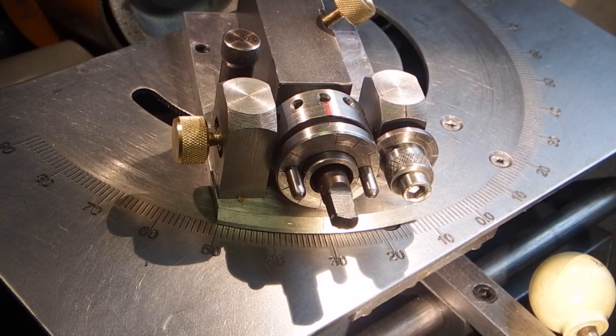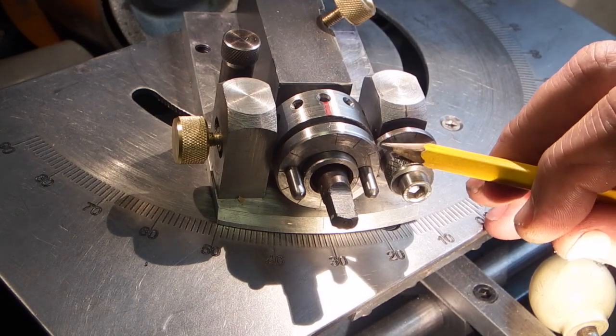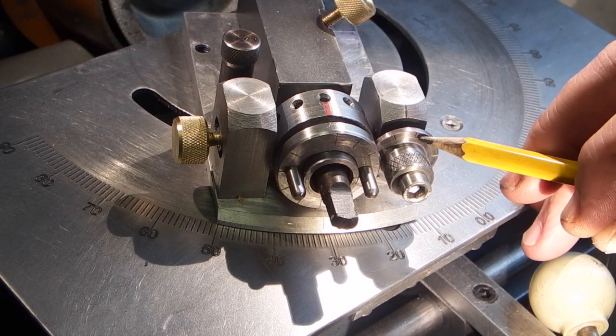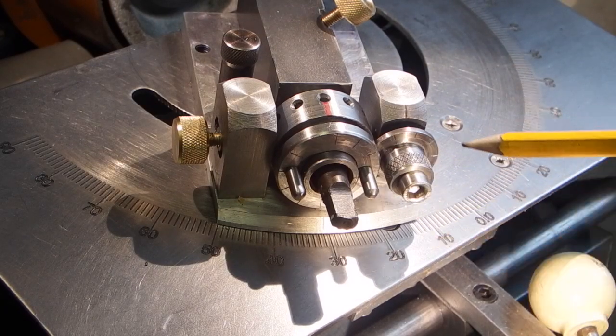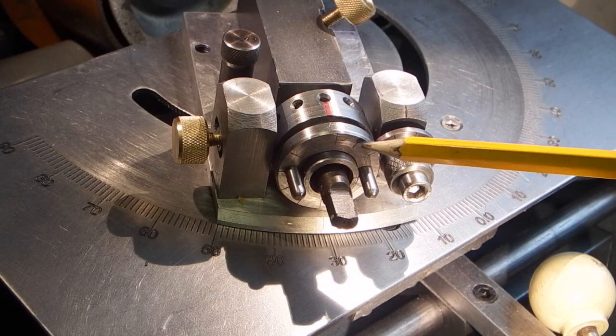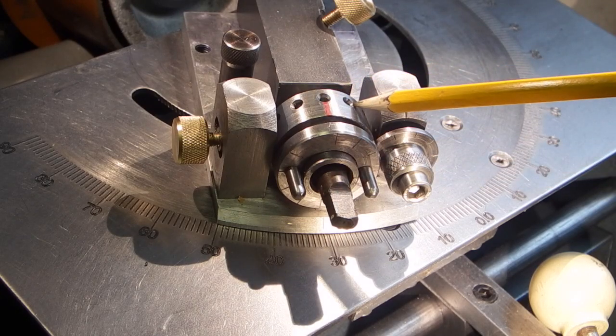On the end of the feed screw I have marked 10 divisions. Here's my zero mark. Each division is 0.1 of a millimeter and on the end of the indexing ring I've marked 12 positions for the 12 holes.